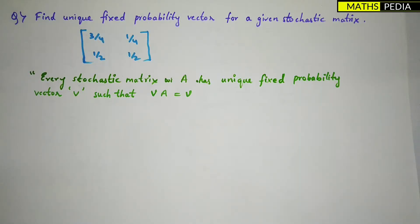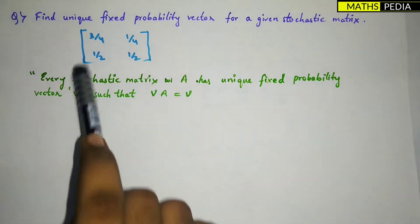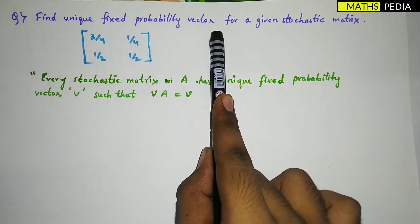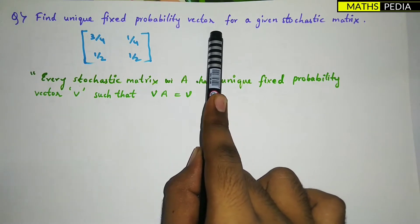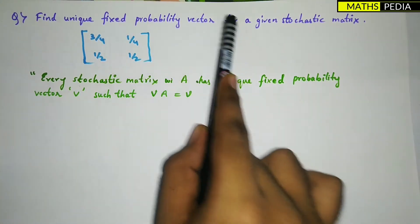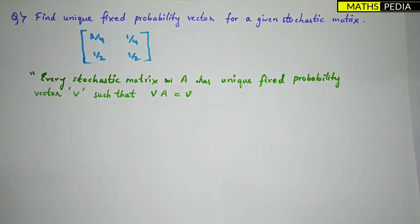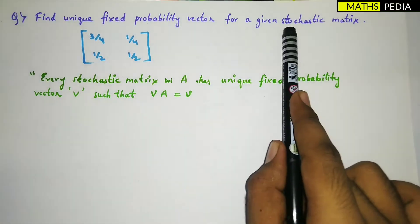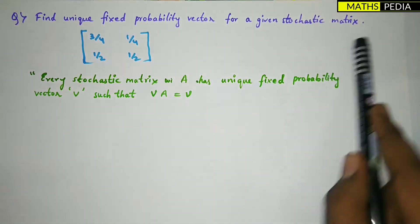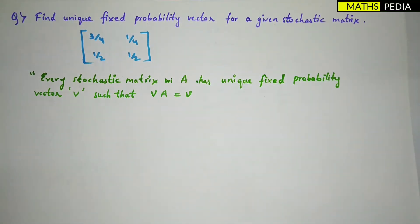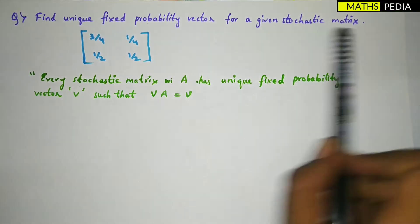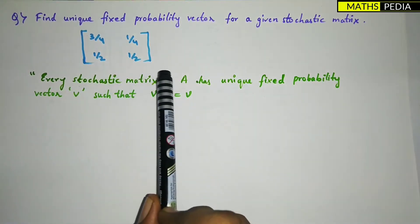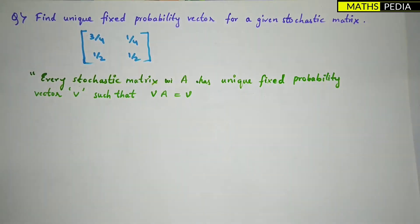In this video we are going to solve a problem based on the unique fixed probability vector. You should understand what a probability vector is — I have also made a video on that, as well as a video on stochastic matrices. Here, given a stochastic matrix, you have to find the unique fixed probability vector.